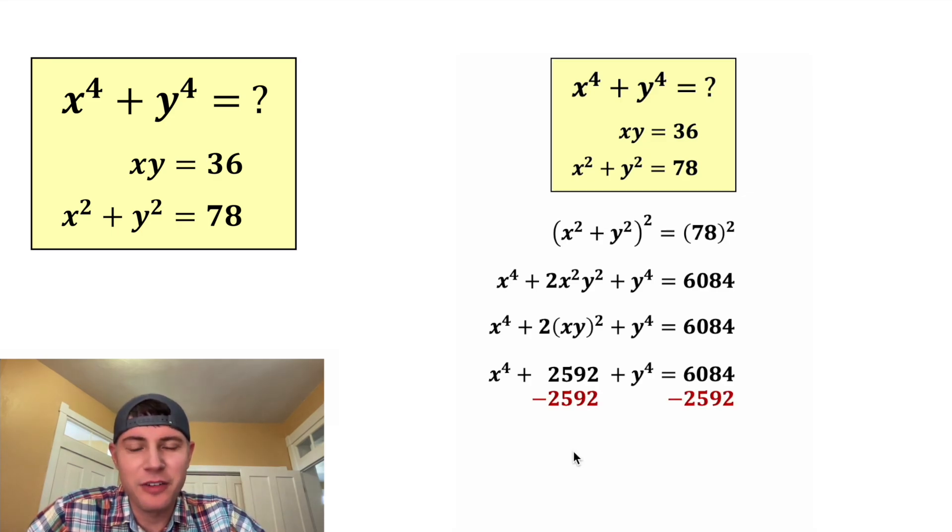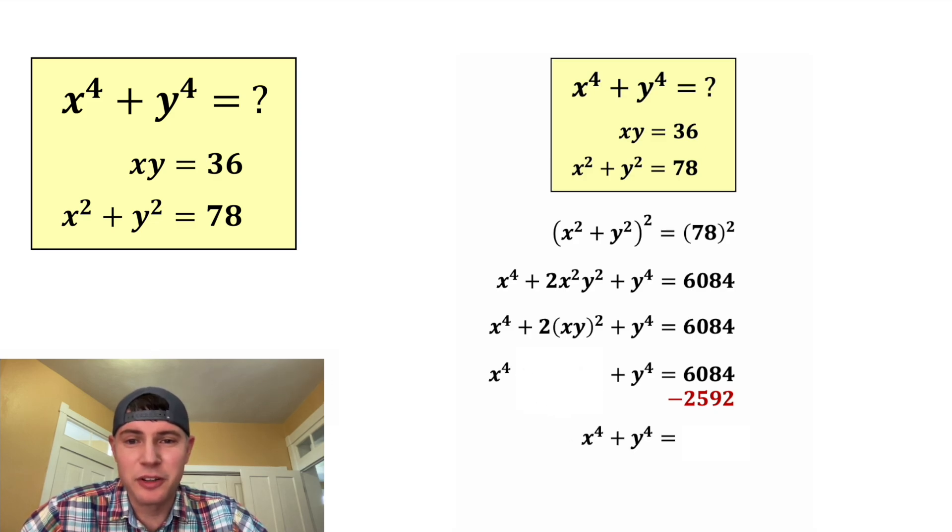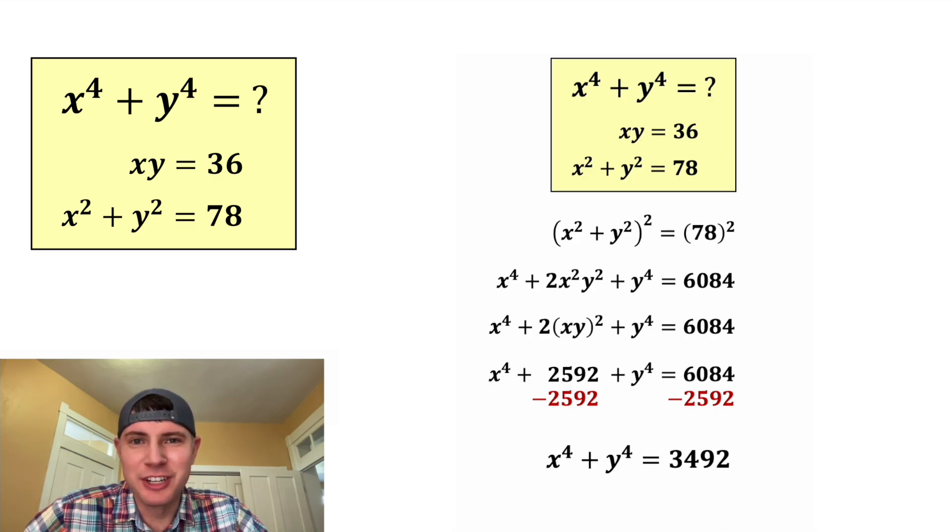We can subtract 2,592 from both sides. On the left-hand side, these will cancel each other out, so we're left with x to the fourth plus y to the fourth. And on the right-hand side, 6,084 minus 2,592 is 3,492. And that's the answer to our question. Let's put a box around it. How exciting.